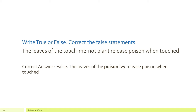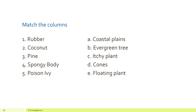Now let's match the columns. Rubber is an evergreen tree that grows in areas with a lot of rainfall. Coconut grows in the coastal plains. Pine has cones. A spongy body helps a plant to float, so it will be a floating plant. And poison ivy is itchy.